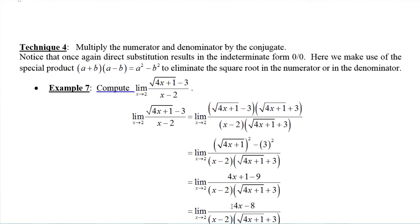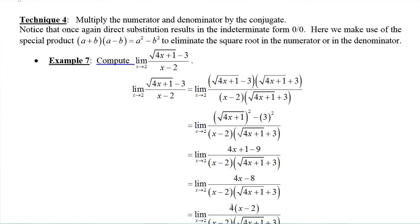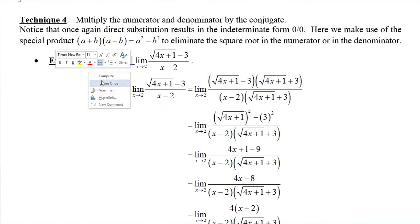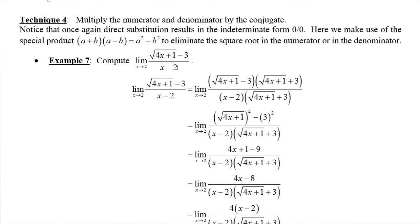Let's look at another example using another technique: multiplying the numerator and the denominator by the conjugate. In this example, we have the limit as x goes to 2 of the square root of 4x plus 1 minus 3, that's the numerator, divided by x minus 2. When we plug in x equals 2, the denominator gives 2 minus 2 equals 0, so the function is undefined there. In the numerator: 4 times 2 is 8, plus 1 is 9, square root of 9 is 3, 3 minus 3 is 0. We get 0 over 0 — an indeterminate form, so we must investigate further.